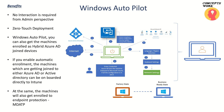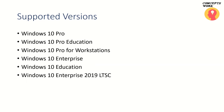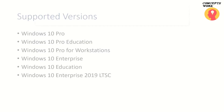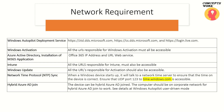The Windows versions supported with this feature are: Pro, Pro Education, Pro for Workstation, Enterprise, Education, and Enterprise 2019 LTSC. It is always recommended to refer to vendor-specific articles for network configuration, but there are certain highlights that help in understanding how Windows Autopilot works.